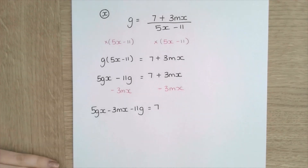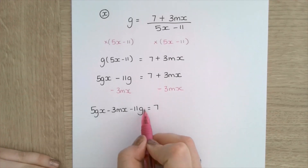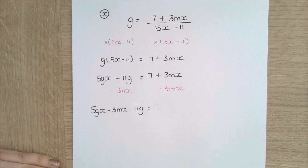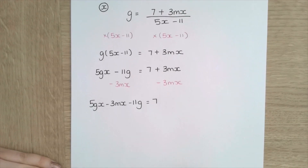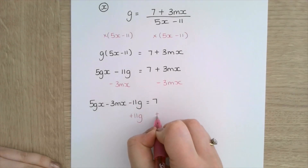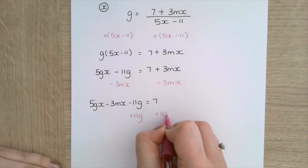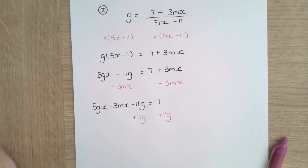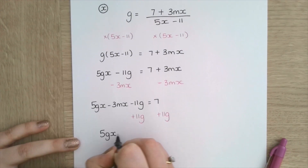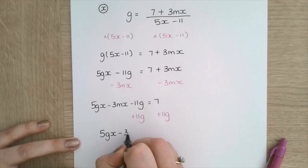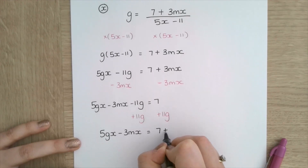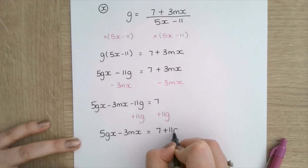And then get rid of the minus 11g because that's got no x's in it, so I'm going to add 11g to both sides. So I'm left with 5gx minus 3mx is equal to 7 plus 11g.